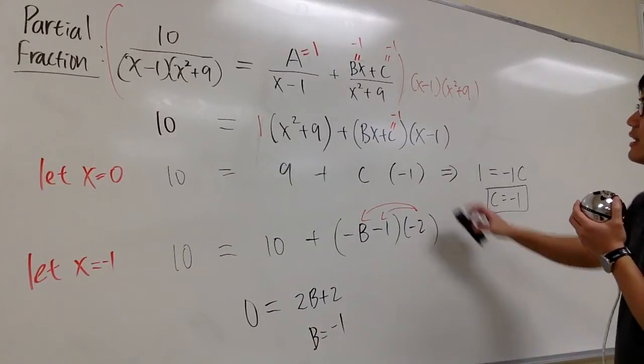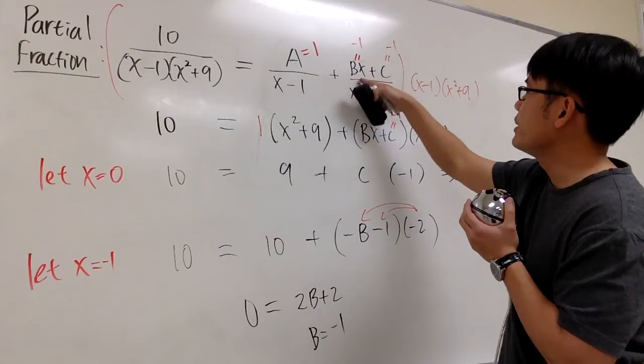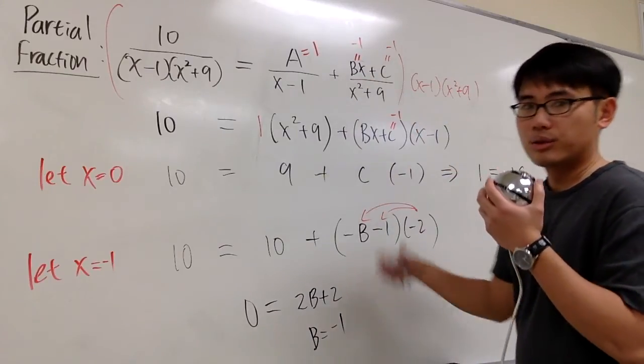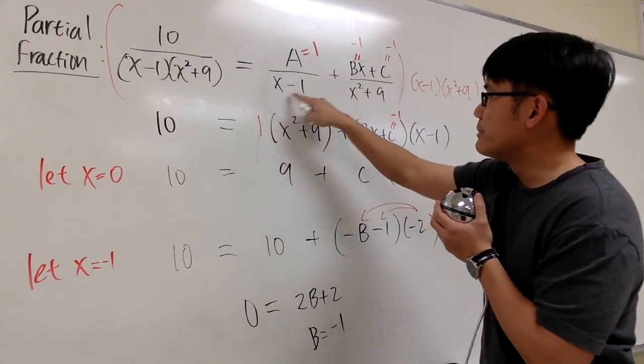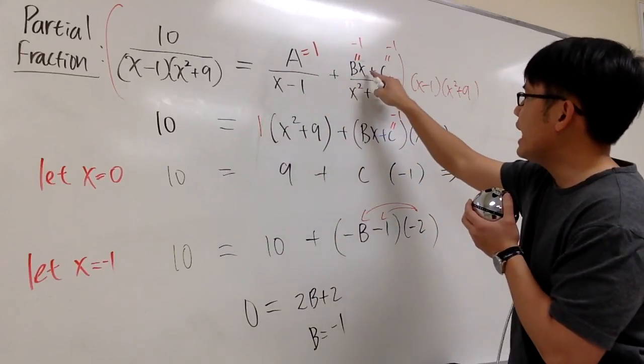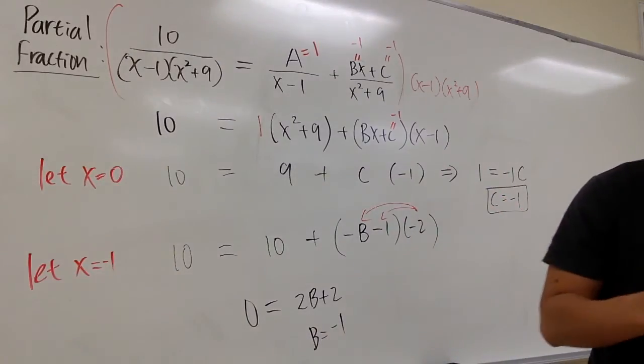So altogether, that's the answer. You can just replace A with 1. B is equal to -1. And C is equal to -1. So to read this out loud, this is going to be 1/(x - 1) + (-x - 1)/(x² + 9). And that's it. Partial fractions.